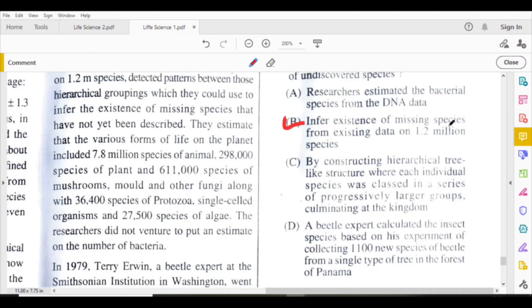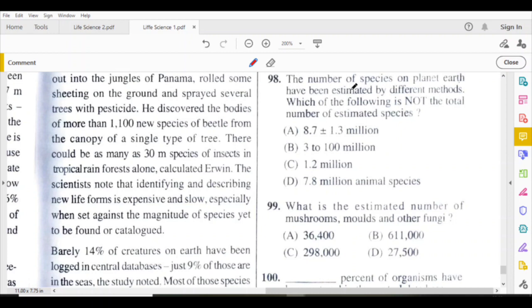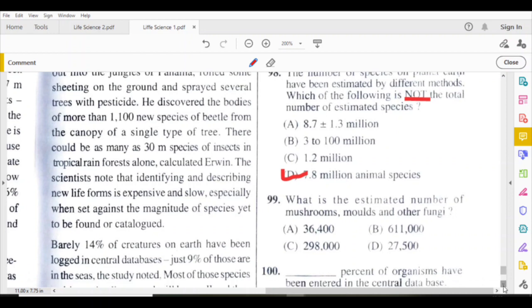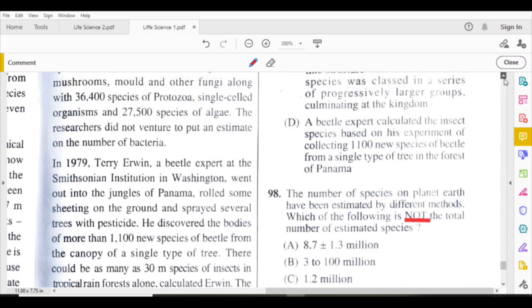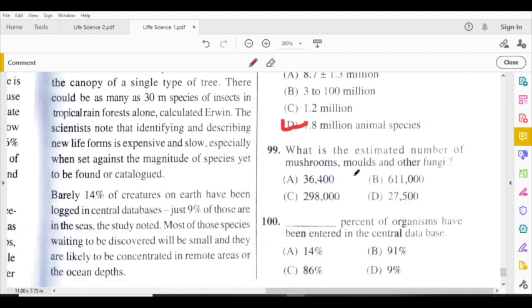Paragraph question: What is the estimated number of mushrooms, molds and other fungi? If you read here, the answer is given itself. See here: 1.5 million species of mushrooms, molds and other fungi. The answer is B.